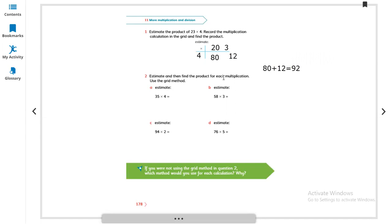20 multiply by 4 is 80 and 12 equals 92. So this is our answer. Same like this we are doing the other questions. Estimate and then find the product for each multiplication using the grid method. Let's do it. 35, so we are making parts: 30 multiply by 4 and then 5 multiply by 4.